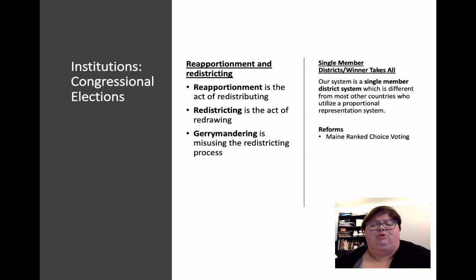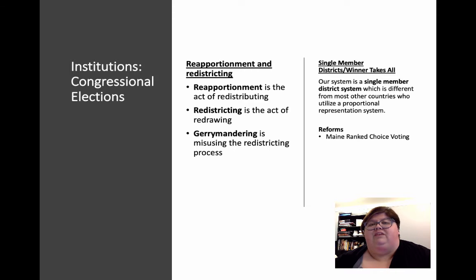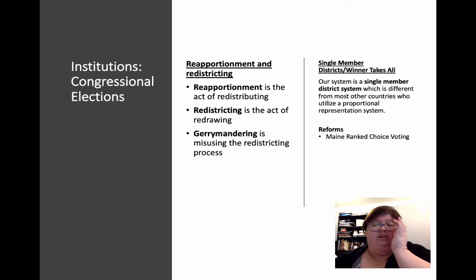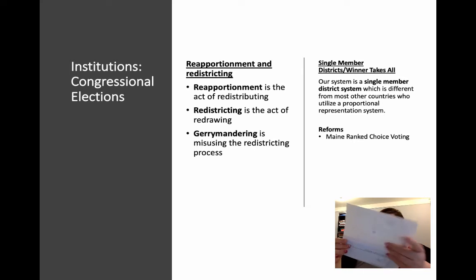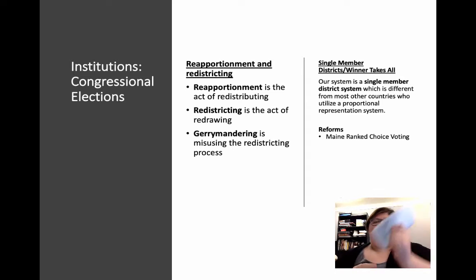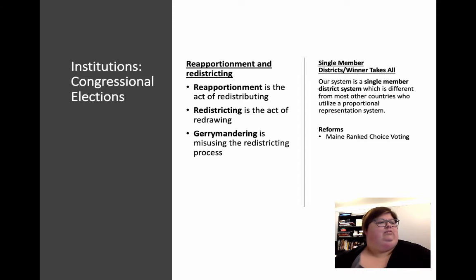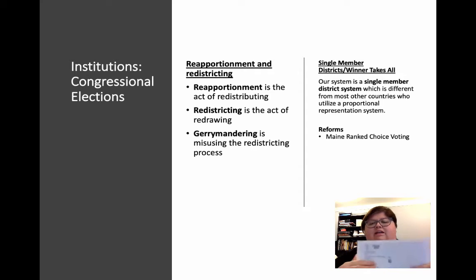A couple of things we've talked about before with respect to congressional elections: one is the idea of reapportionment and redistricting. Reapportionment is the act of redistributing how many representatives you get per state based on population numbers. I'm going to pull up my census form here, because that's done based off of the census, which we are in the middle of now. I went online and filled it out — it gives you a code, you fill it out, it's all done online now.